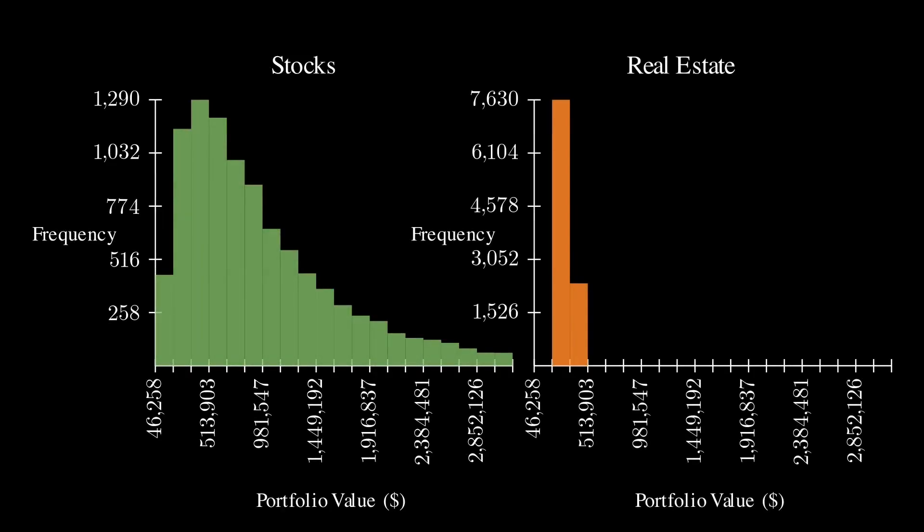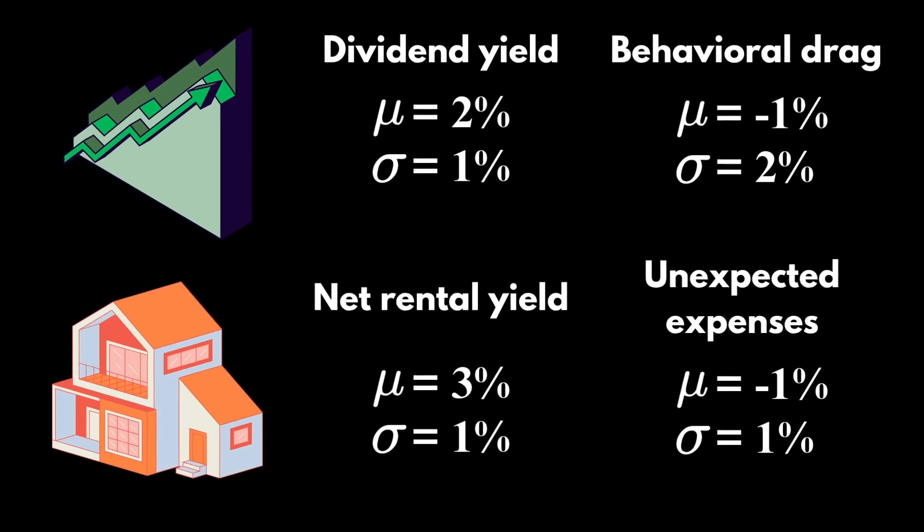In the real world, those returns don't tell us the full story though. There are many other influences that vary over time. So to make this scenario a bit more realistic, let's add a probability distribution for dividend yield and behavioral drag on the stock market side, as well as the net rental yield and unexpected expenses on the real estate side.